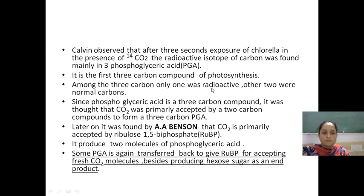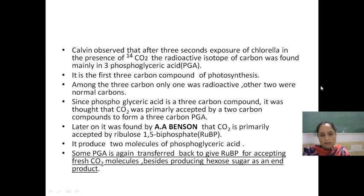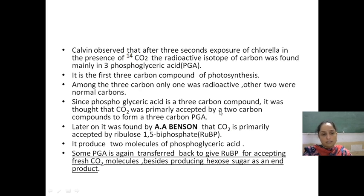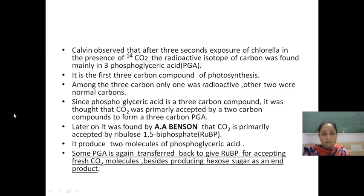Among the three carbons of phosphoglyceric acid, only one carbon was radioactive — the labeled one — and the remaining two were normal. Since phosphoglyceric acid is a 3-carbon compound, it was initially thought that CO2 was primarily accepted by a 2-carbon compound. But later it was found this was not the case.